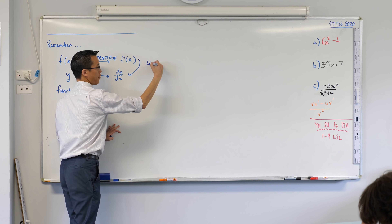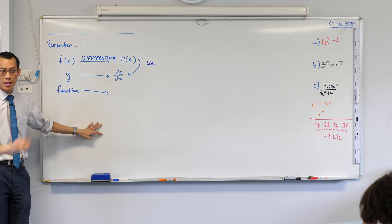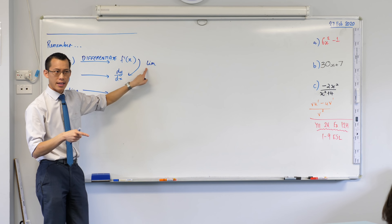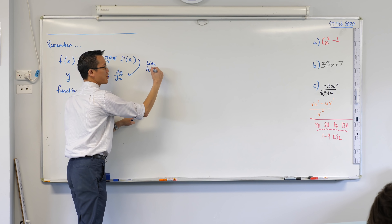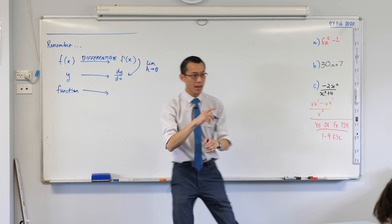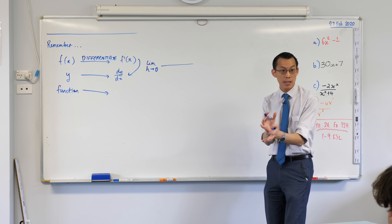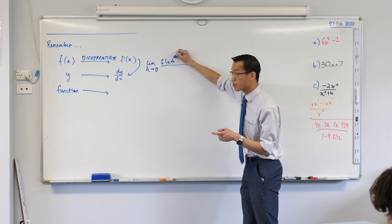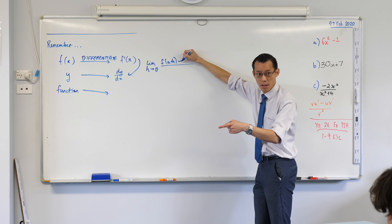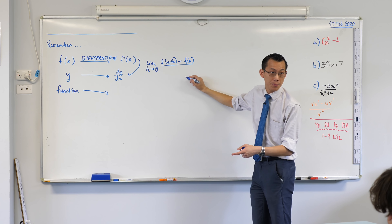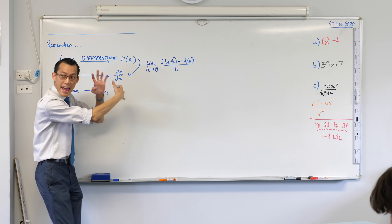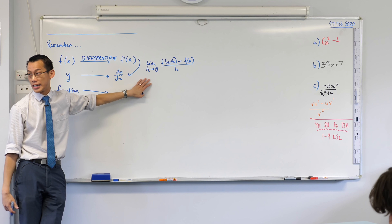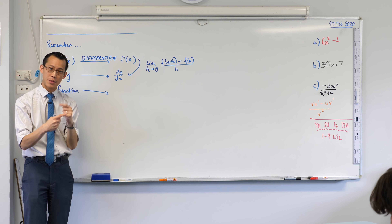See if you remember — this is how the real thing begins. There's 'lim', which stands for limit. Underneath it, there's h approaching zero. Then there's this monstrous fraction: f of x plus h, minus f of x, all over h. We call this first principles. You can see why we don't like writing it over and over again, but it captures something very important.